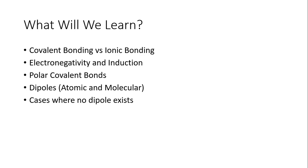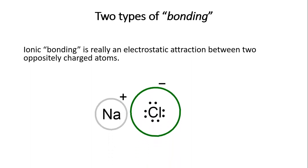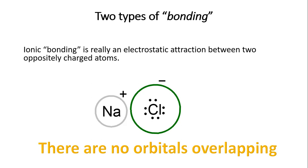There are two types of bonding. 'Bonding' is in quotes because ionic bonds are not really bonds in the sense of overlapping orbitals. An ionic bond is more like an electrostatic attraction between two atoms of opposite charge. In sodium chloride, sodium is positive and chlorine is negative — they're attracted to each other's charge. There are no overlapping orbitals; it's strictly based on opposite charges.